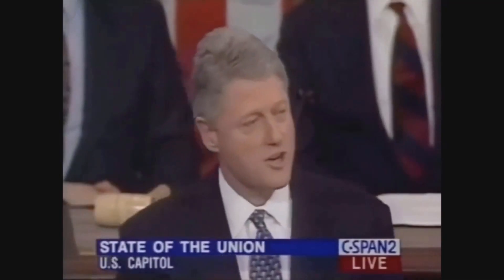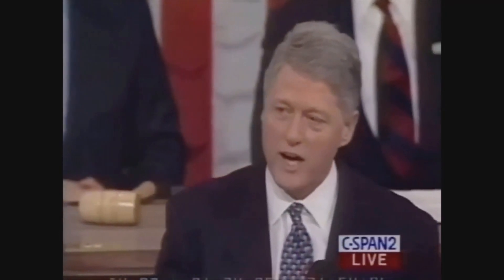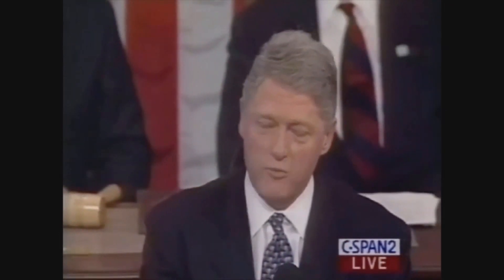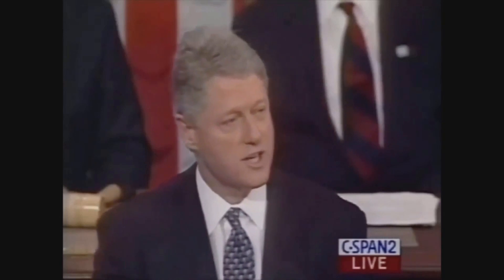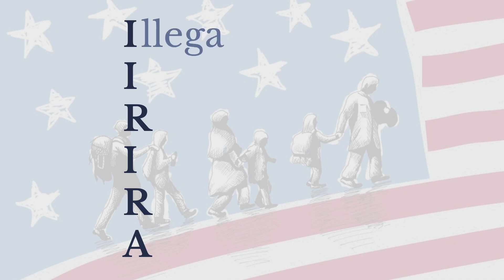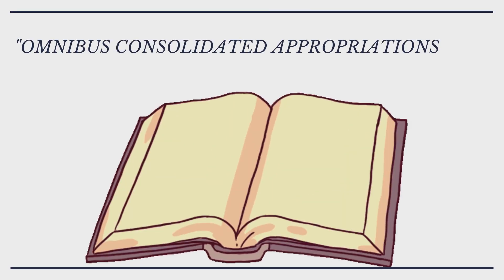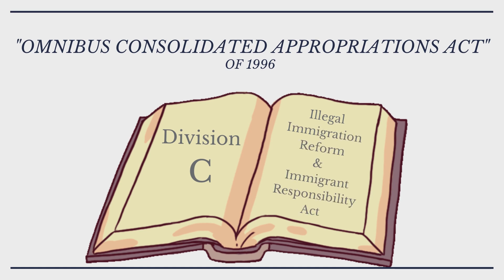That's why our administration has moved aggressively to secure our borders more. Many of the trends in U.S. immigration law today can be tracked back to 1996, when the Clinton administration passed and enforced landmark immigration policy. The Illegal Immigration Reform and Immigrant Responsibility Act, or IIRAIRA, was written as Division C of the Omnibus Consolidated Appropriations Act, written by Representative C.W. Bill Young on June 11, 1996.